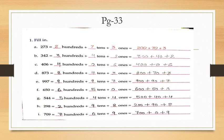Next, Part C: 406. Four is at hundreds place, zero is at tens place, and six is at ones place. You will write: 4 hundreds + 0 tens + 6 ones. In expanded form: 400 + 0 + 6.